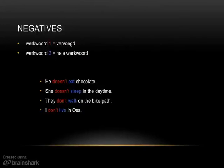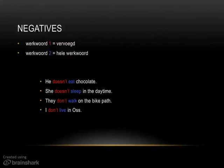To make it very clear, I've put it in color. Werkwoord 1 in the negative is conjugated, werkwoord 2 is the whole verb. Werkwoord 1 is in red, werkwoord 2 is in blue. I hope that helps a little bit. Okay, bye guys!